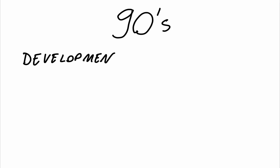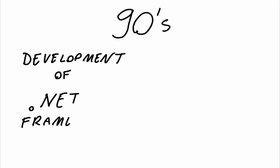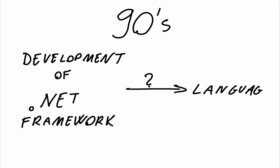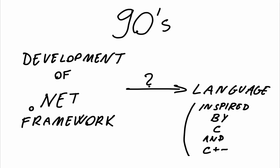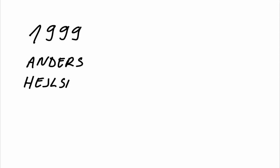Everything started in the 90s, when Microsoft was developing .NET and therefore needed a language for this kind of framework. The plan back then was to develop a simple, robust and modern programming language, which used C and C++ as an inspiration. This task was taken over in 1999 by Anders Heigelsberg.